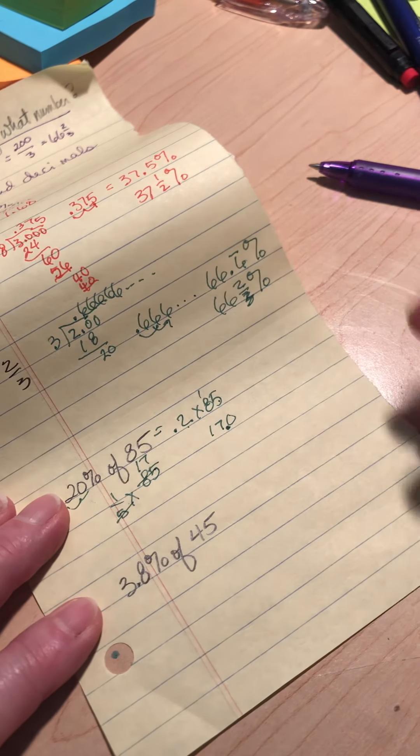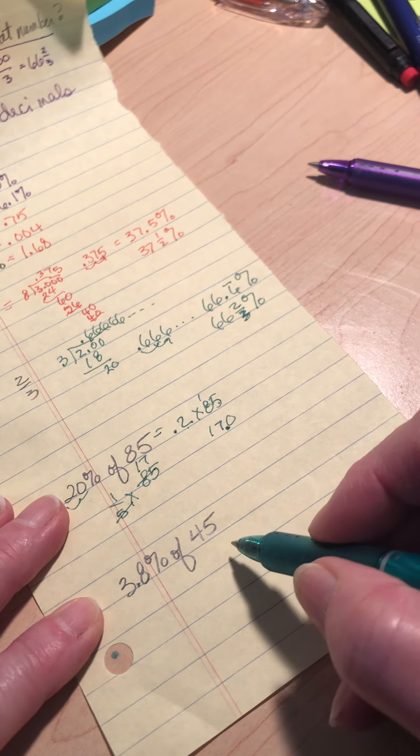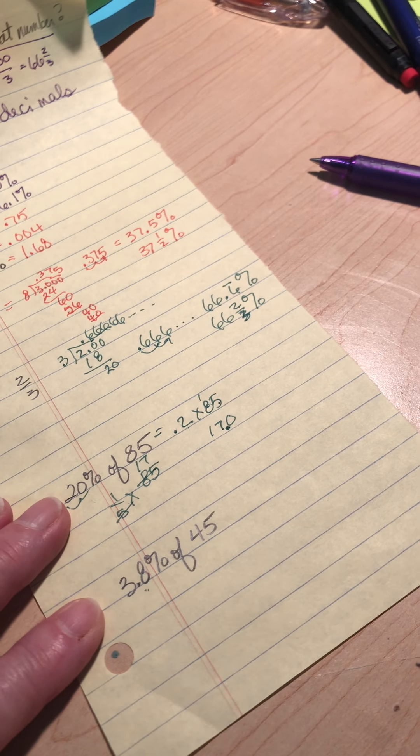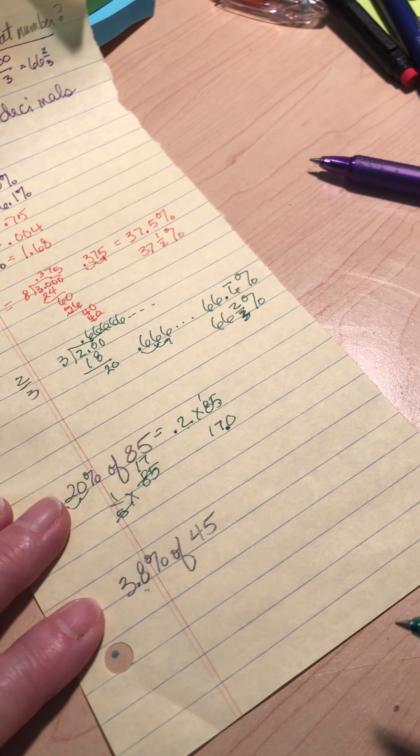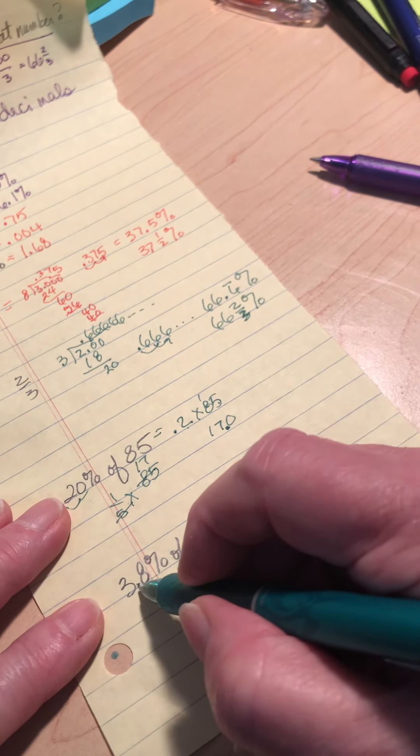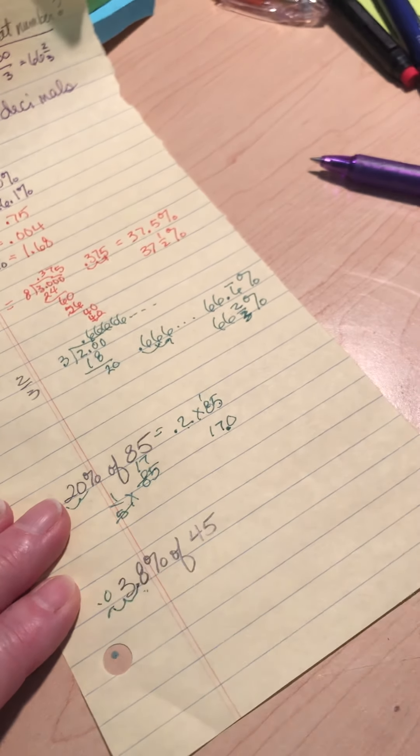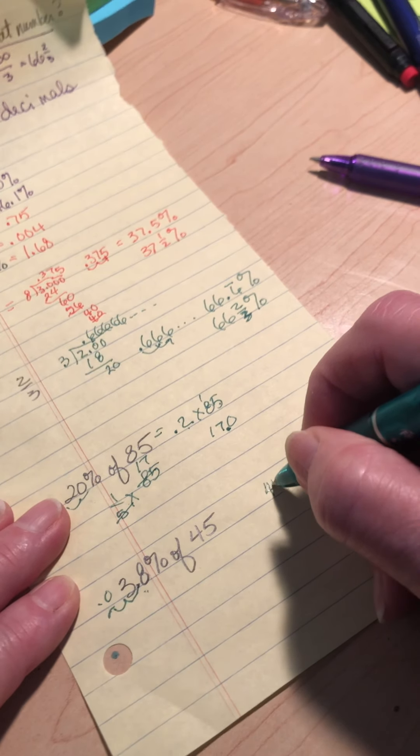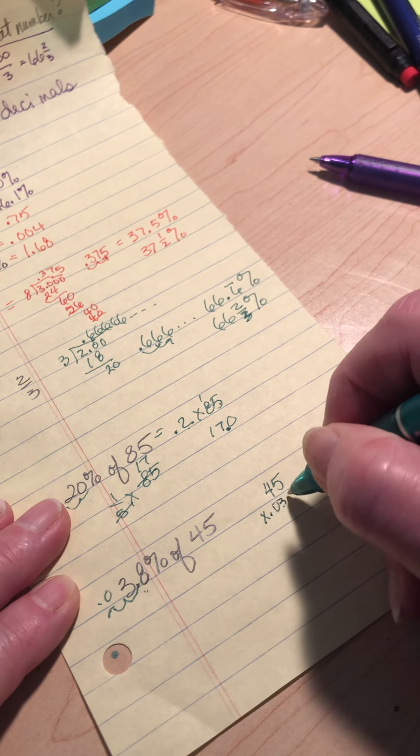Now, if I had 3.8% of 45, I'm going to tell you right now, I'm changing that to a decimal. Because I don't know what fraction that is. And that kind of looks scary to me. So I move it twice this way. That means I've got to put a 0 in front. 45 times 0.038.